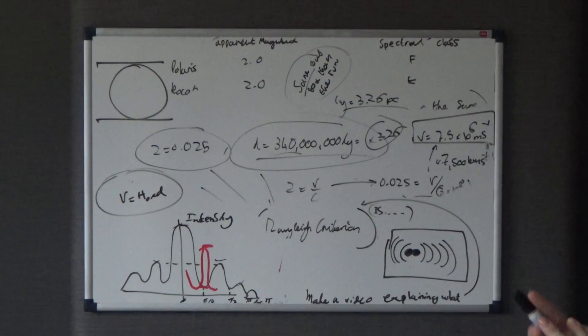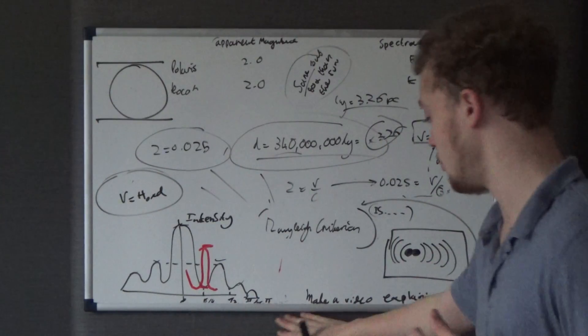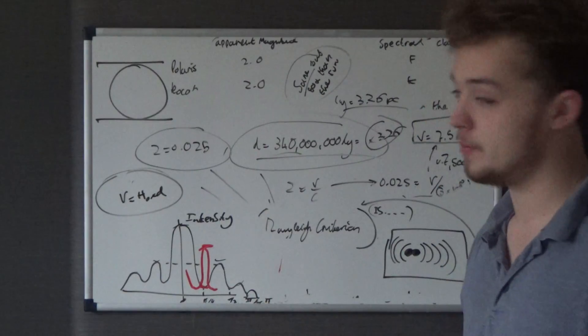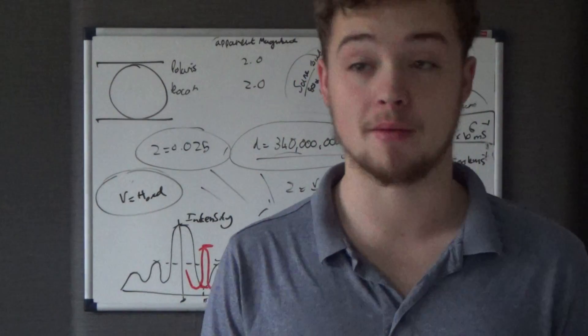So we've got two light sources here, and the best way to describe it is using this diagram here that I've drawn. Yeah, so basically, it's the smallest angular separation to be able for us to distinguish that there's actually two separate light sources there in the first place.